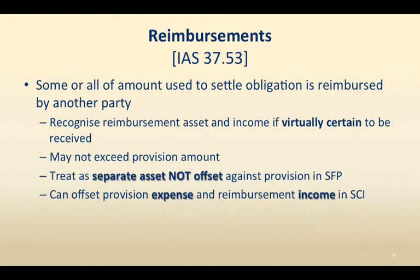The reimbursement is treated as a separate asset and not offset against the provision in the statement of financial position. The offset can be applied to the provision expense and reimbursement income in the statement of profit or loss. So for example, if you are being sued and it is probable you will lose, you recognize a provision; if another company will reimburse you and you are virtually certain of this, you recognize a reimbursement asset. In the SFP you will have a provision in liabilities and a reimbursement asset in assets — you disclose them separately and do not offset them.